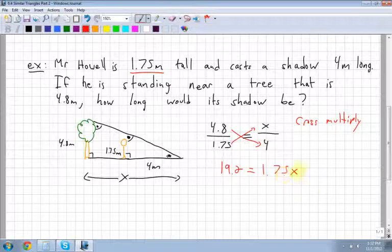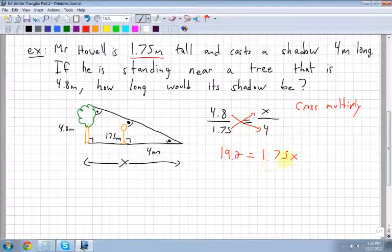How do I solve for x? Do you remember? Well, right now the 1.75 is being multiplied with the x. It's with the opposite of multiplication. Division.